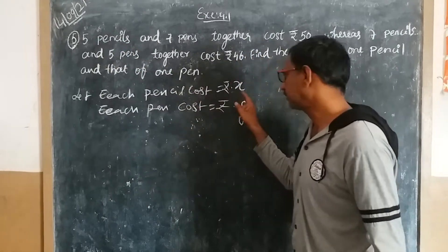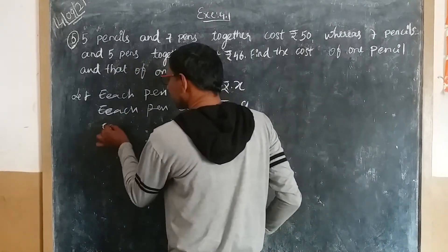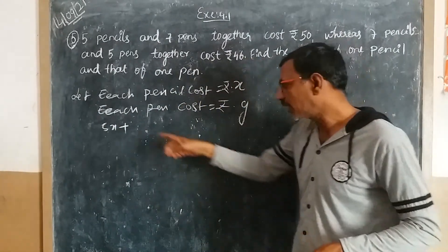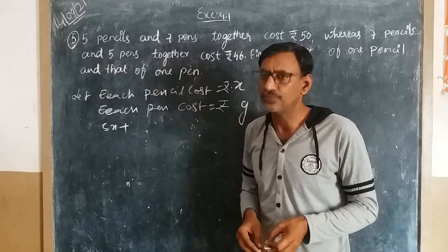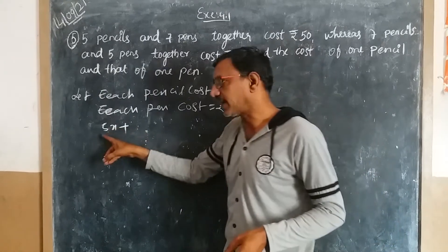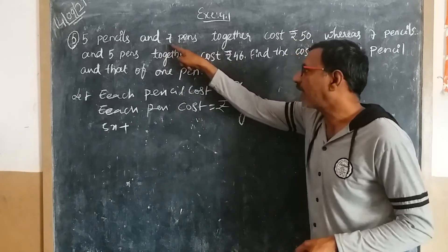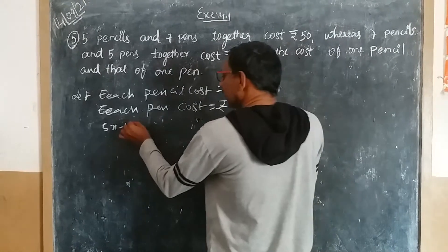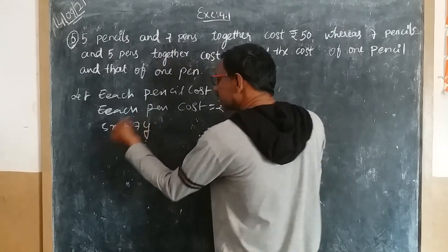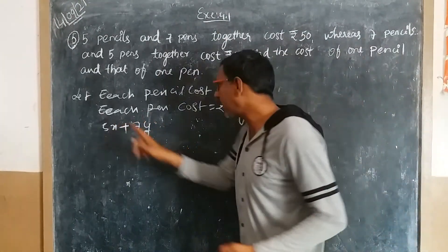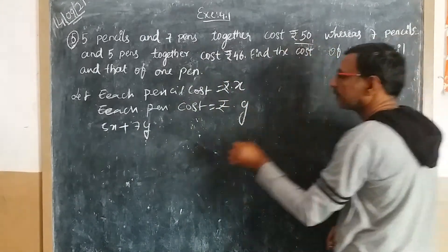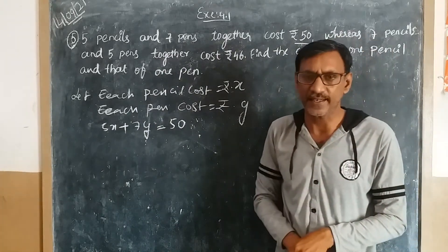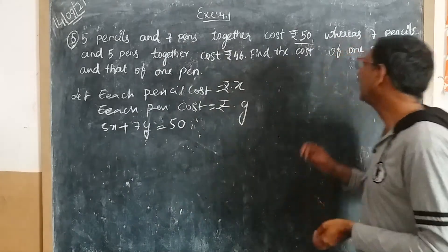Five pencils—that is 5 times x. Each pencil costs x rupees. How many are taken? Five. So 5x plus seven pens—seven pens means 7 times y. Together they cost 50 rupees. So 5x + 7y = 50. This is the first linear equation from the data.